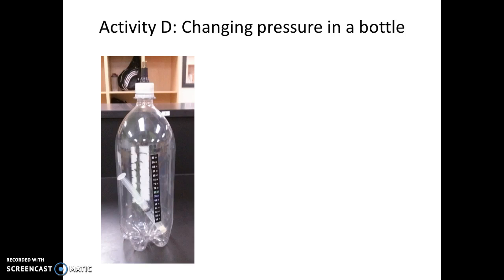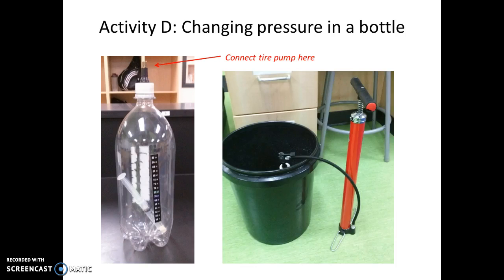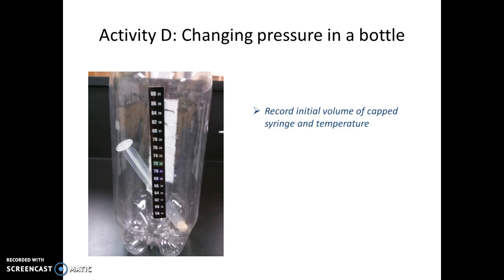The next activity, Activity D, involves changing the pressure in a soda bottle. Get a two-liter soda bottle with an adapter at the top so you can connect it to a tire pump. Before you start pumping air into the bottle, make a few observations. On the side of the soda bottle there is a liquid crystal thermometer — a big black strip with large numbers representing temperature in degrees Fahrenheit and smaller numbers on the right representing degrees Celsius. Record the temperature that appears green on the thermometer.